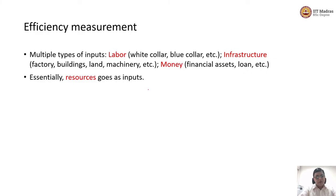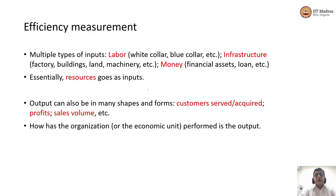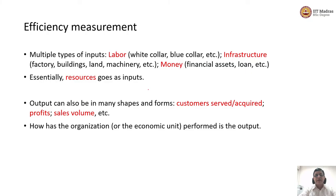We generally don't deal with a single input, and similarly we don't deal with a single output. Output of an economic unit could be measured in various ways: number of customers served, customers acquired in a time period, profits, sales volume, revenue, or for a hospital — the number of days it took a patient to recover. Any benefit that comes out of an economic unit is output, and it tells us how the organization has performed on that particular dimension.